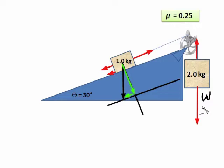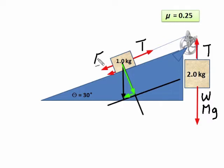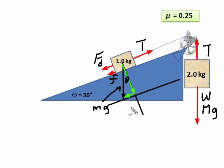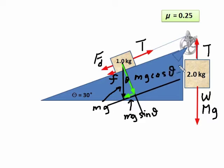This is the weight of the 2 kg mass — it's mg. This is the tension, and we have the same tension acting on the 1 kg mass. The force acting down the incline, and here's the friction also acting down the incline. That side is mg — the weight acting down. Theta is in the middle. mg sine theta is the weight acting down the incline, and mg cos theta is how much of that 1 kg mass is pushing into the incline.